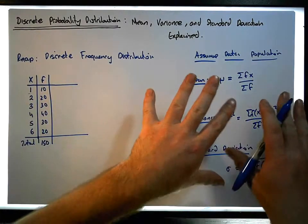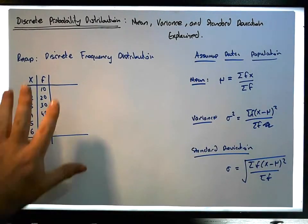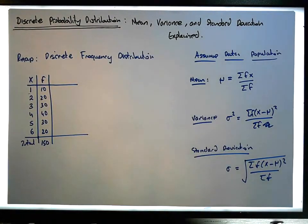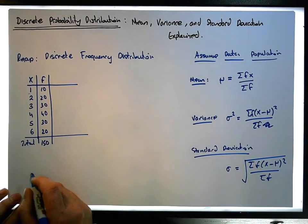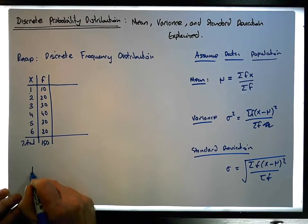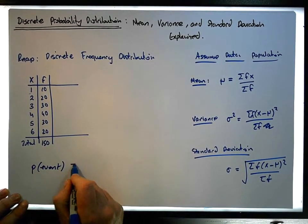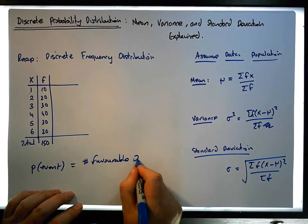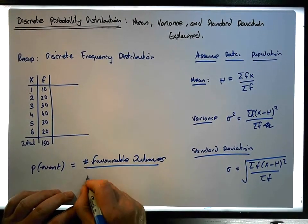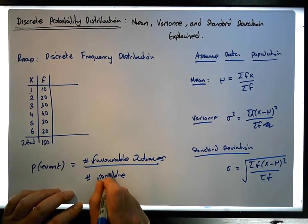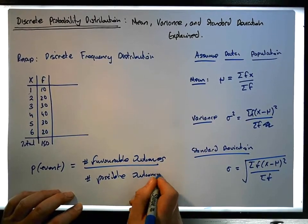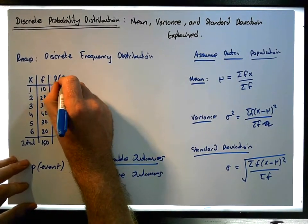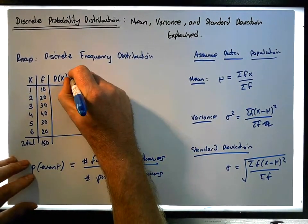We can calculate the mean, variance and standard deviation of these discrete distributions, as shown in a previous video. But what about if we have a probability distribution? From an empirical probability perspective, the probability of an event is simply equal to the number of favorable outcomes divided by the number of possible outcomes. We can convert this frequency distribution to a probability distribution by adding an extra column p(x) representing the probability of each individual event.